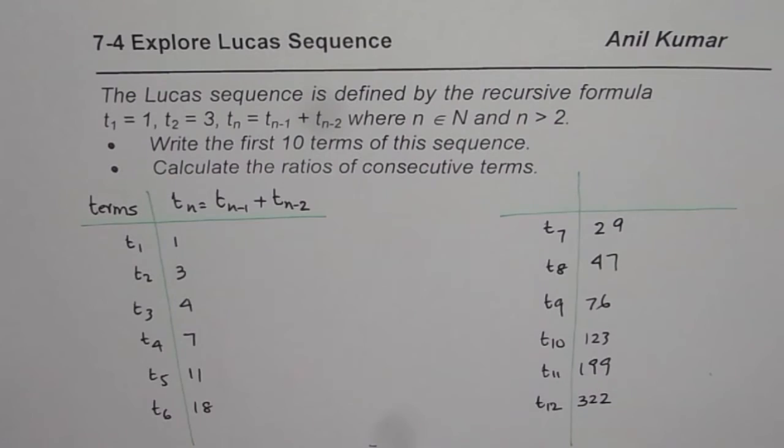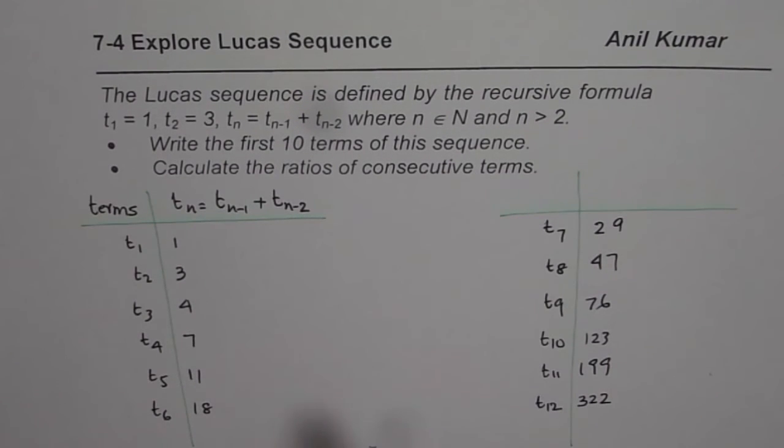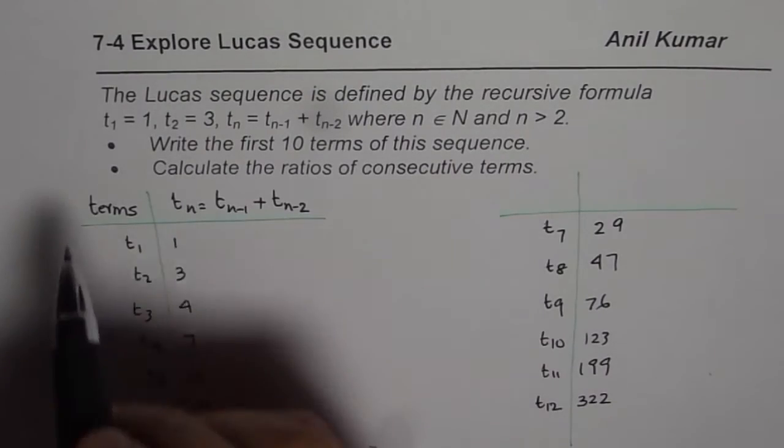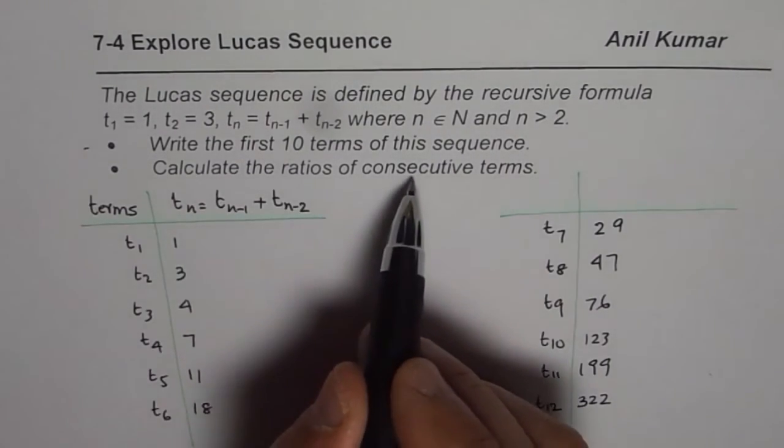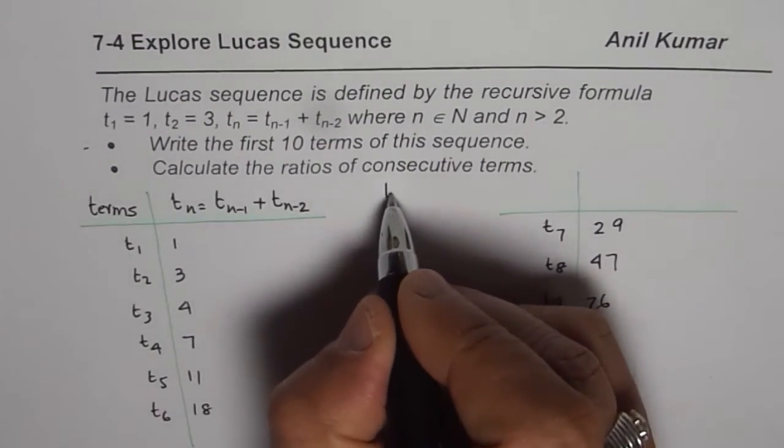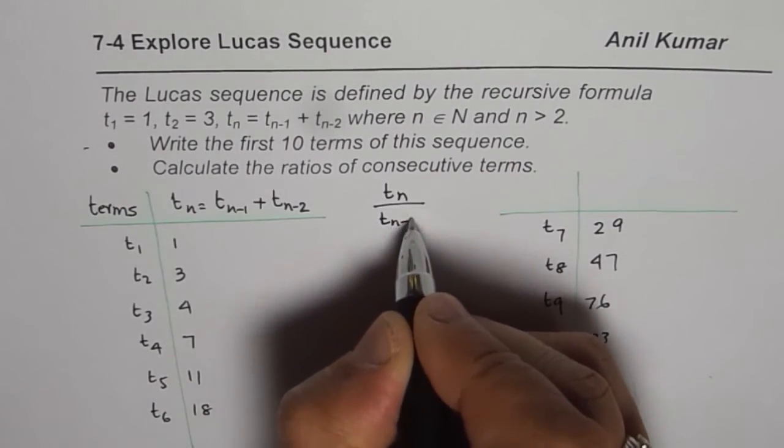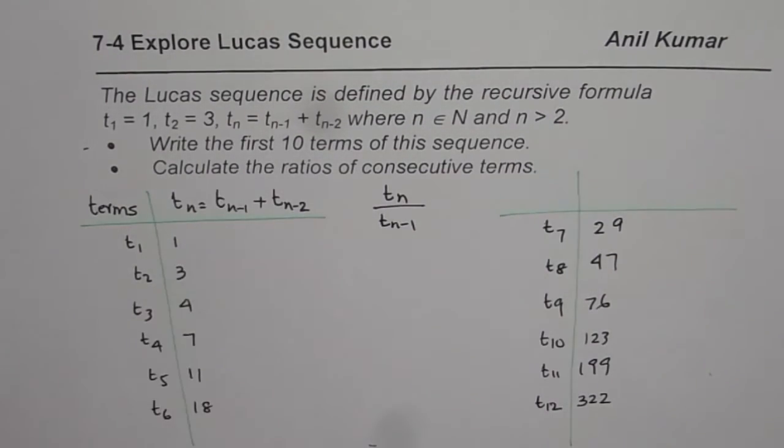Now, that is the first part, writing down 10 terms, we wrote 12. Anyway, now let us find the second part which is calculate ratios of consecutive terms. It means we will calculate tn divided by tn minus 1. So let me use a different ink, it will be better I think. So, what we can do is,